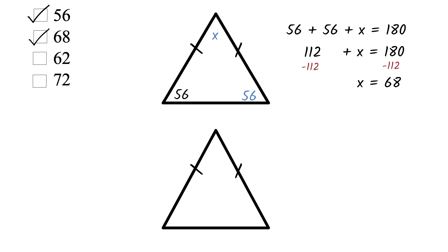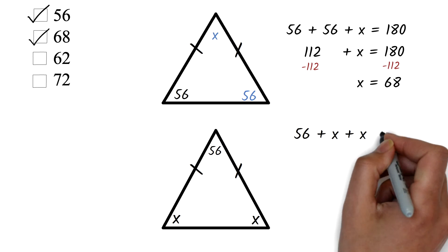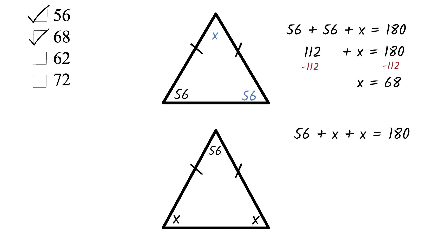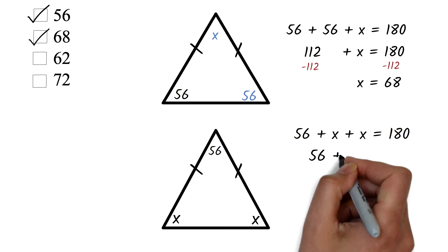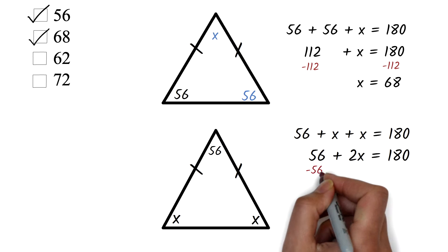The second scenario is that the 56 degrees is the angle that is not part of the pair. In that case, since the other angles are the same, we can represent it with X. So we'll have 56 plus 1X plus 1X equals 180. We add the X. We have 56 plus 2X equals 180. We solve the two-step equation.